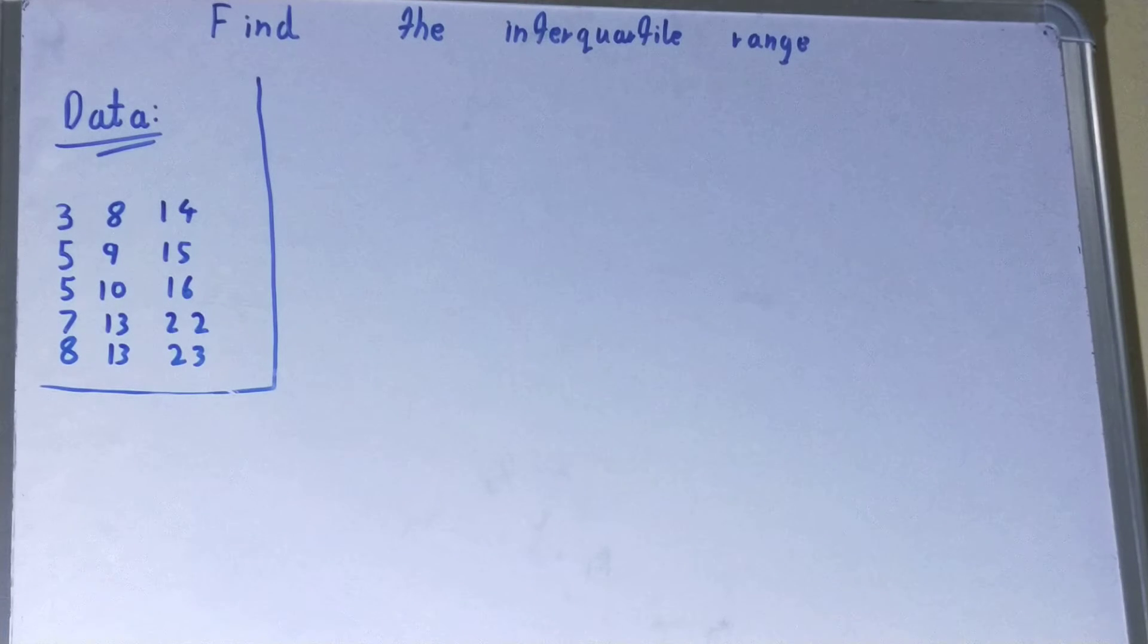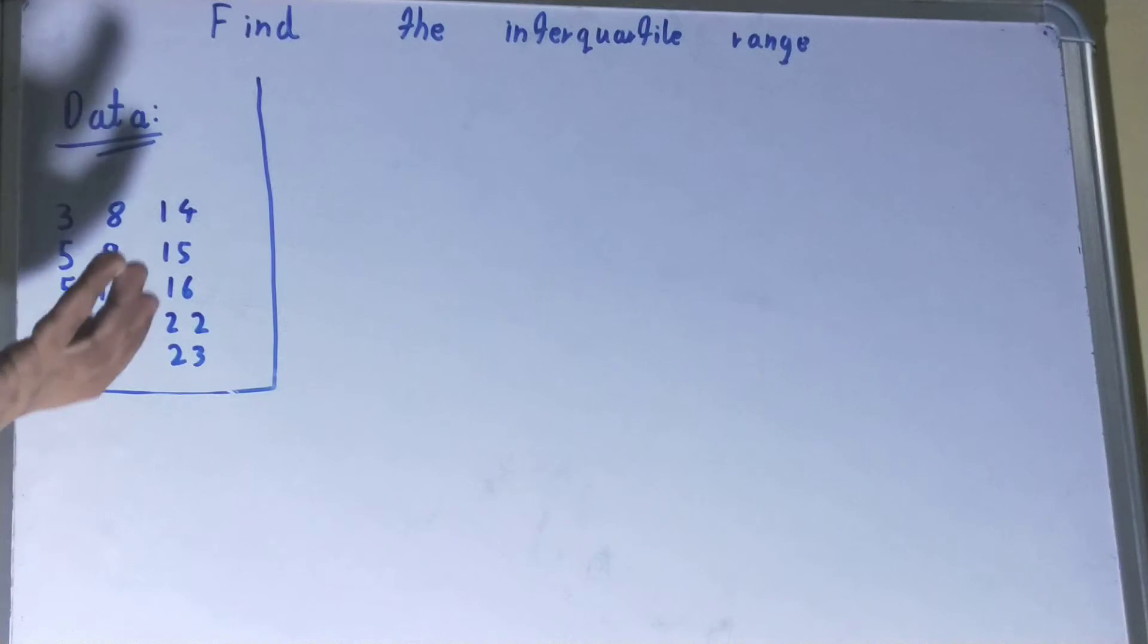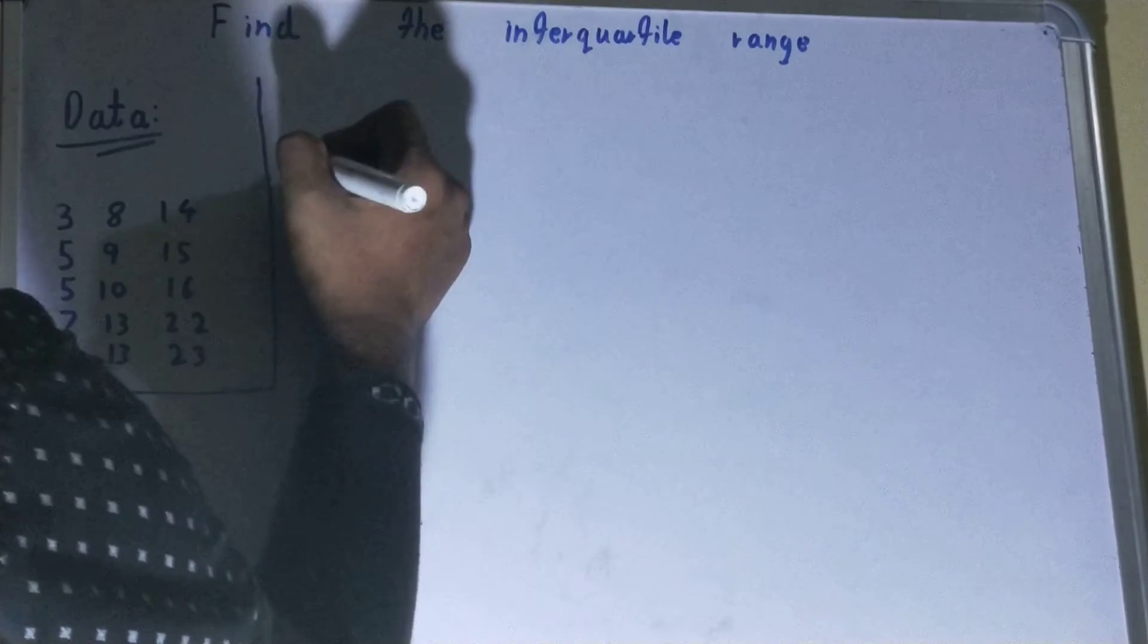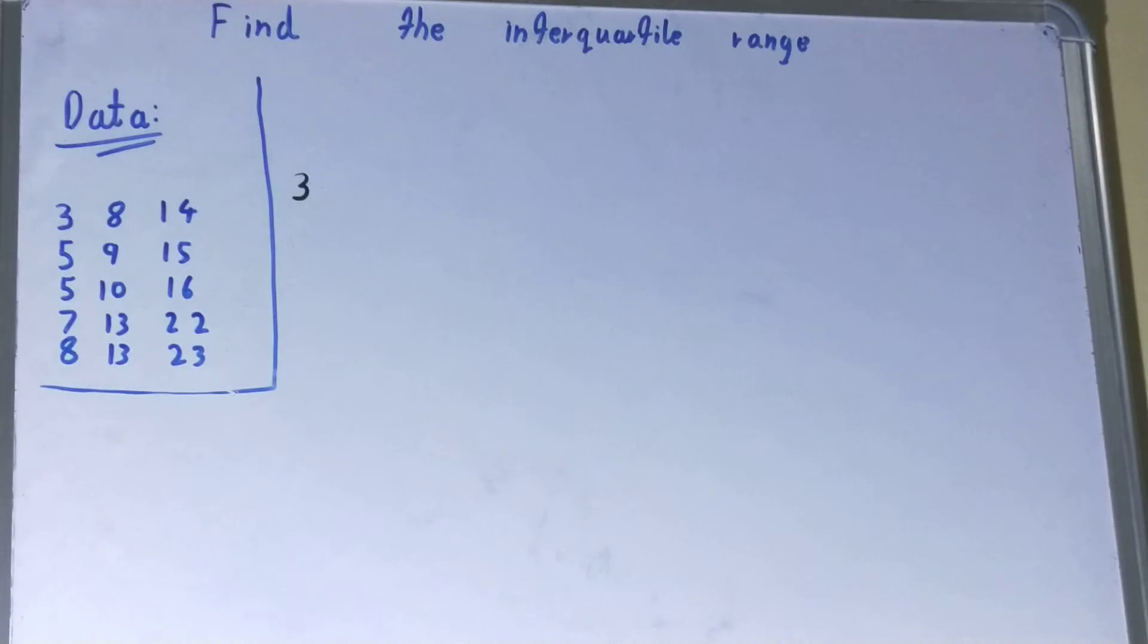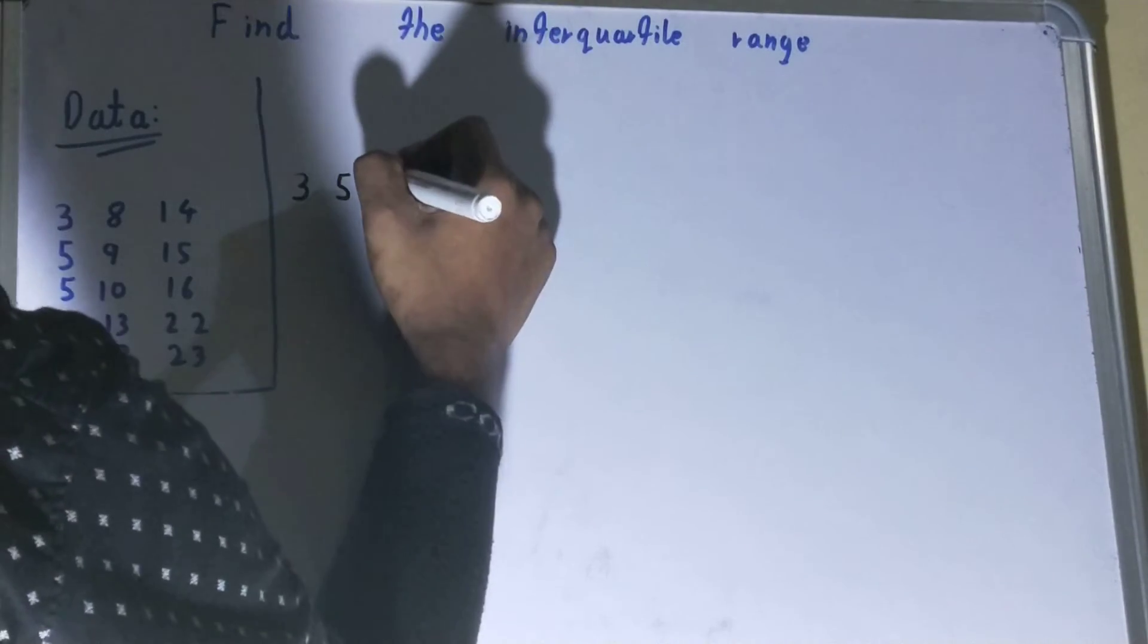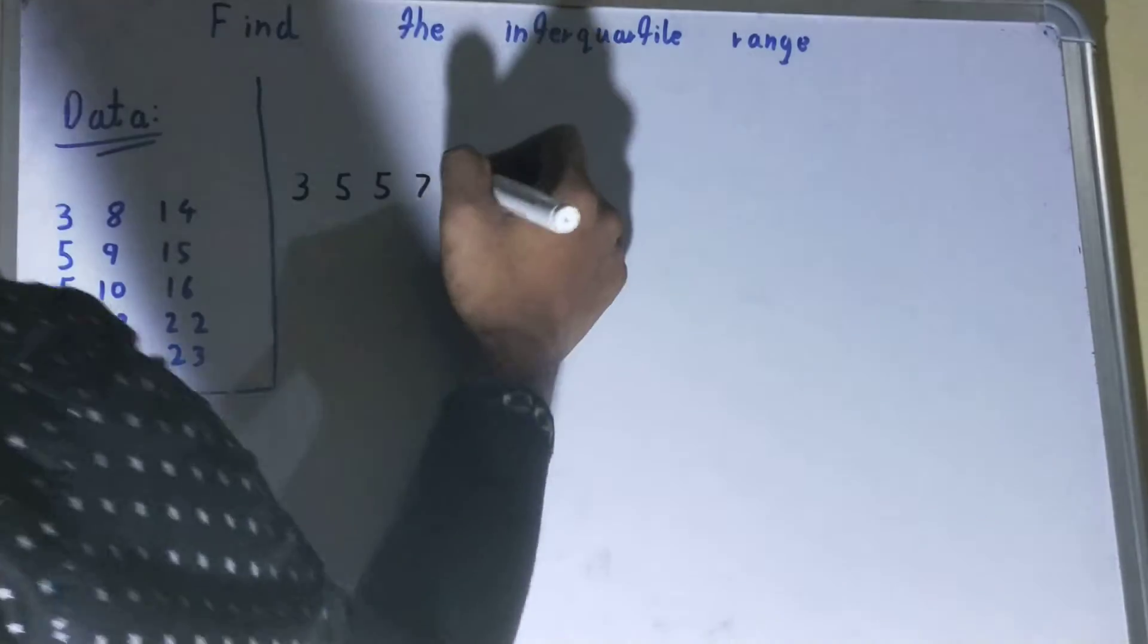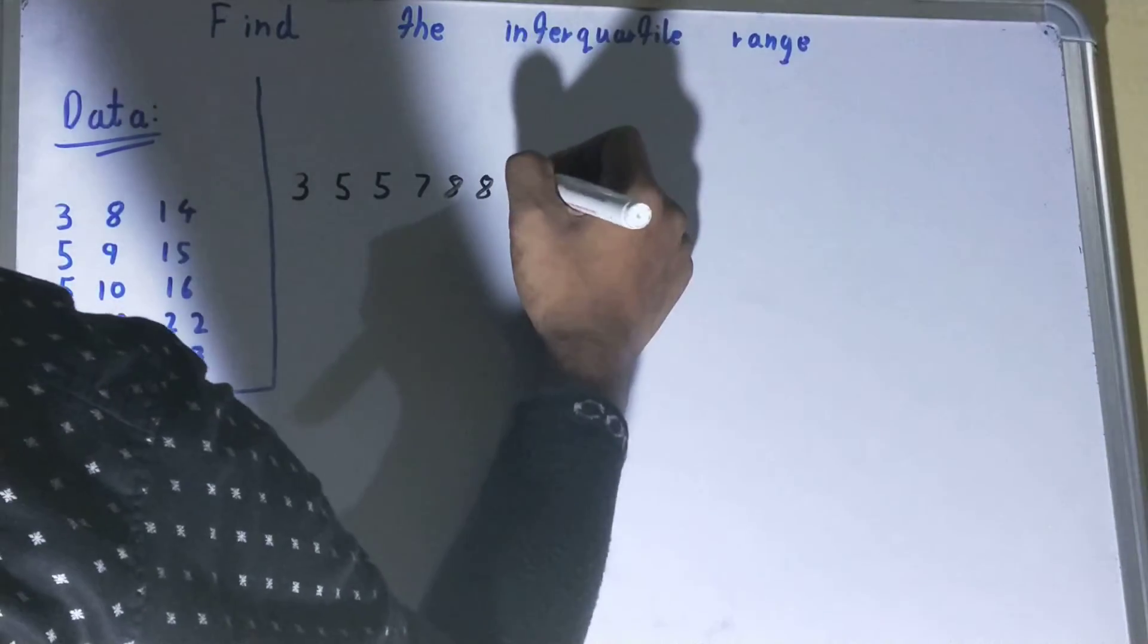You'll be asked to find the interquartile range, so let's try it out. The first step is you need to write the data set in a sorted manner from smaller to the larger one. So let's write down: first will be 3, then 5, then 5, then 7, and then 8, 8, 9.